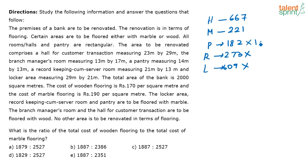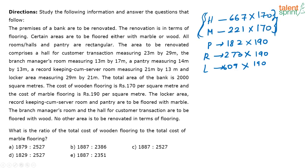The marble rooms will be multiplied by 190, and the wood rooms will be multiplied by 170, because the hall and the manager's room alone are getting wood flooring. So you have to multiply the respective areas by their rates, add all the figures, and get the answer.